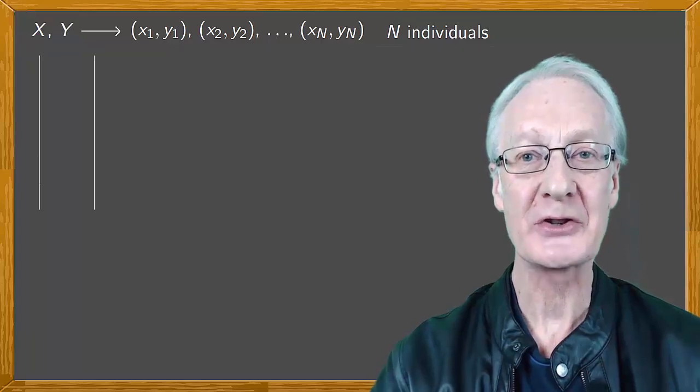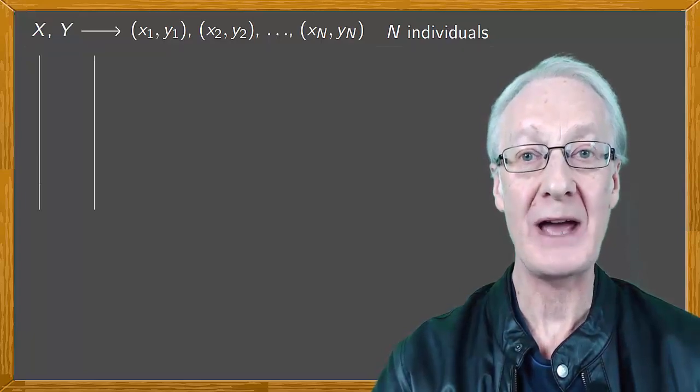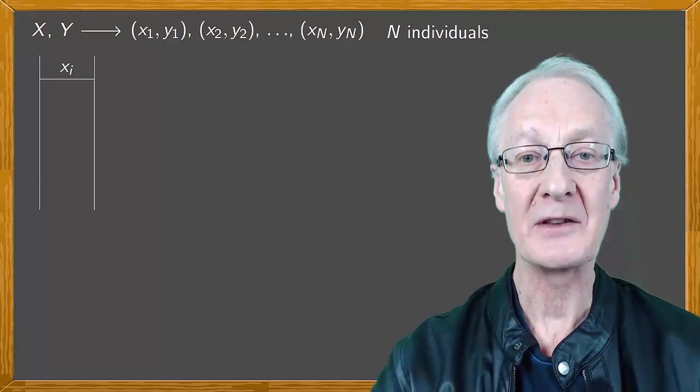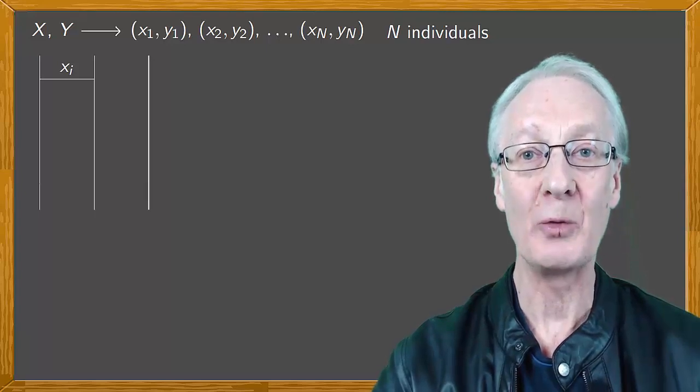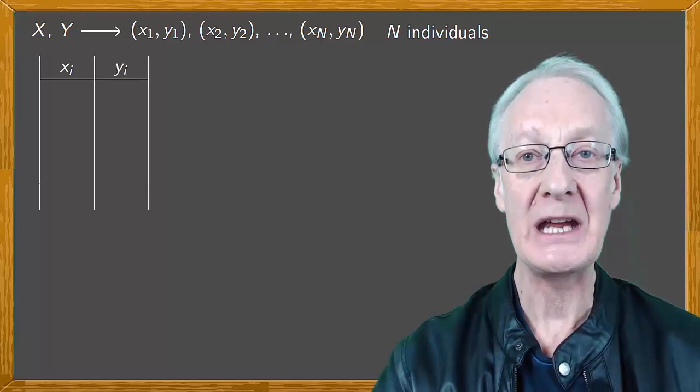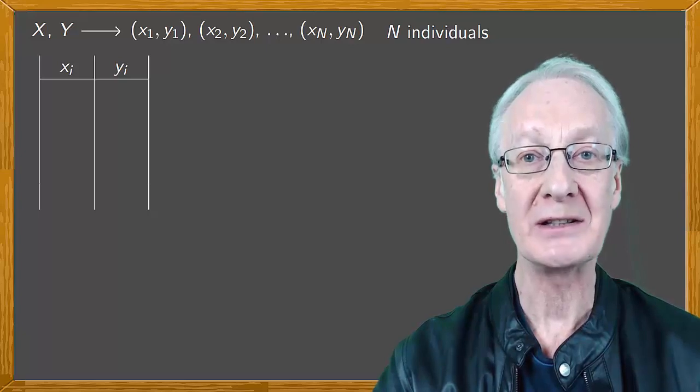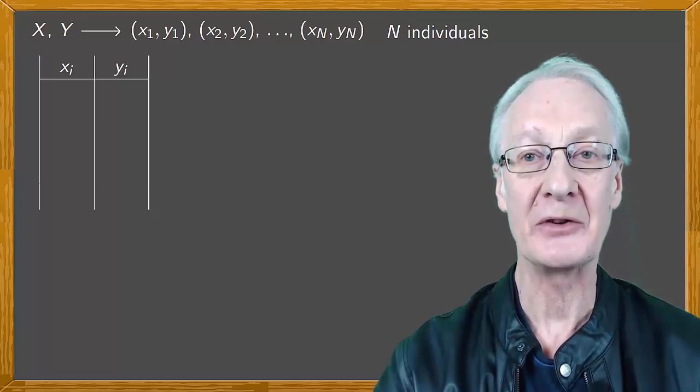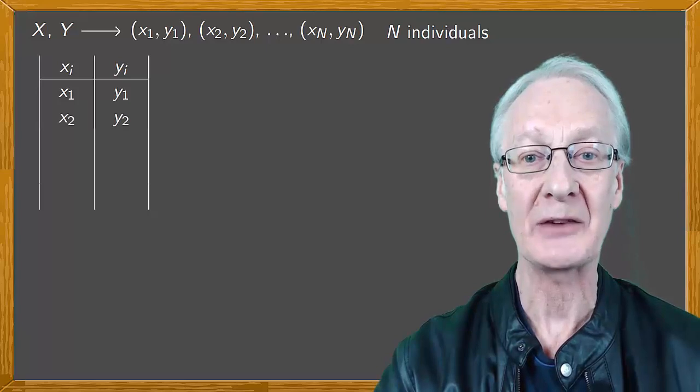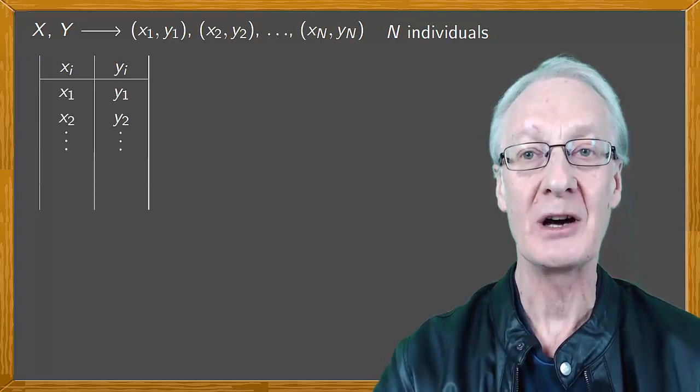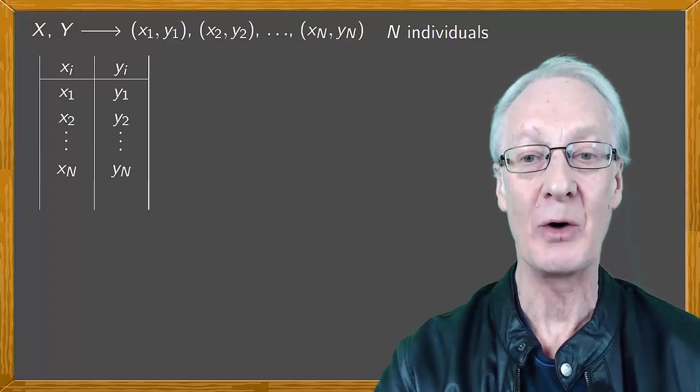In the tables the first column will contain the data for x, xi, and the second the corresponding data for y, yi. Each row will have the data for each individual. In the first row we'll have the data for the first individual x1 y1, in the second row the data for the second individual x2 y2 and so on, until we reach the data for the last individual xn yn.